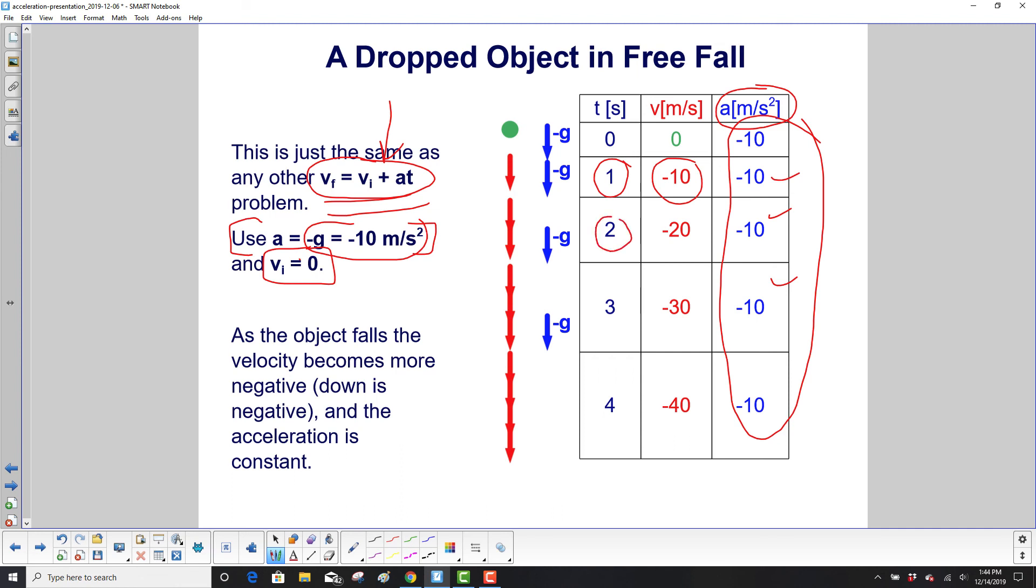After two seconds, we're doing negative 20 meters per second. Three seconds, negative 30, and so on.